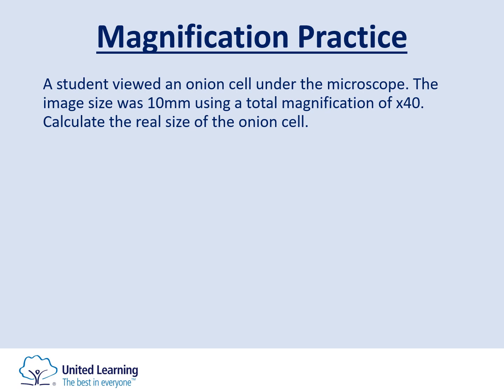Practice the magnification equation: a student viewed an onion cell under the microscope. The image size was 10 millimeters using a total magnification of 40x. Calculate the real size of the onion cell. Note that 'real size' and 'actual size' are interchangeable. Use the version of the equation that solves for actual size: actual size equals image size divided by magnification. Pause the video to complete the question using the EVERY method.